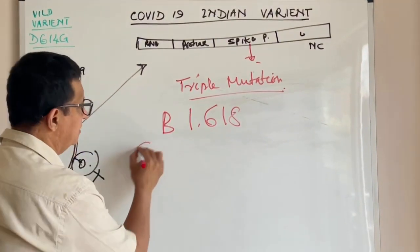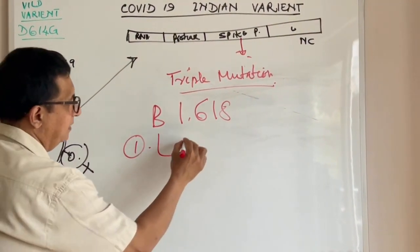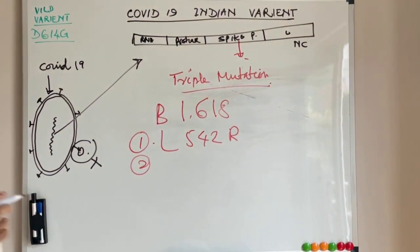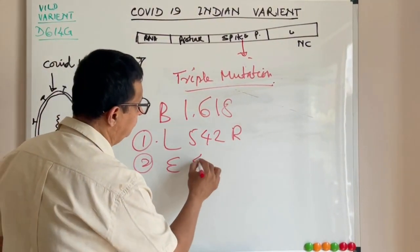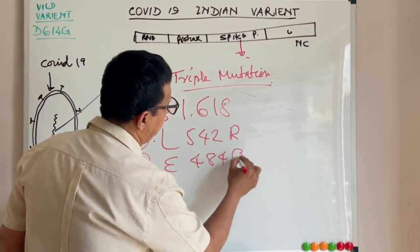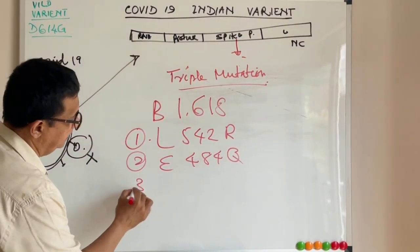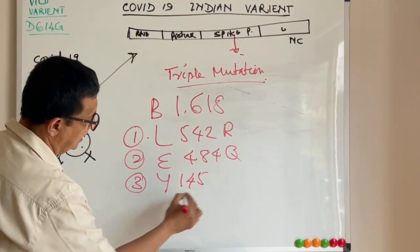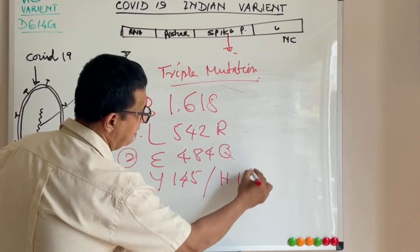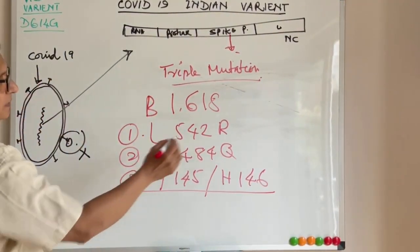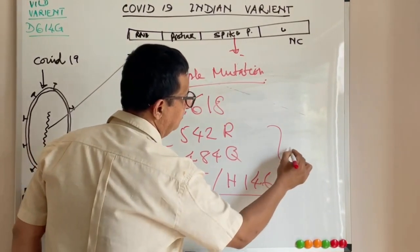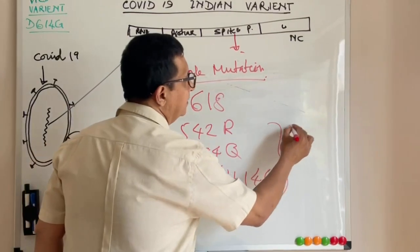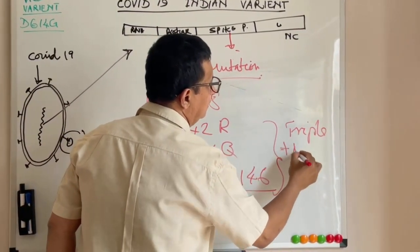The triple mutation B1618 contains L452R, E484Q, and deletion Y145 and H146. This combination of these three mutations are called triple mutation.